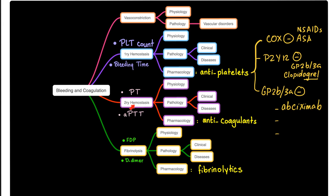Step number three is secondary hemostasis — thank the coagulation factors. Drugs that inhibit coagulation factors are called anticoagulants, and we have three subtypes. Number one is warfarin — also called coumarin, dicumarol, or coumadin.